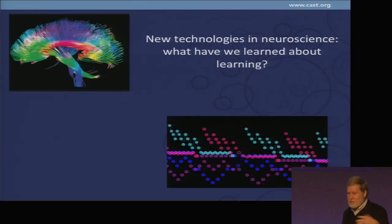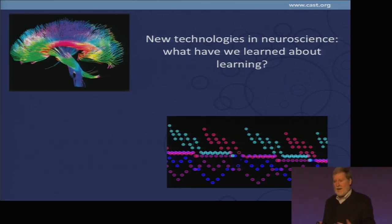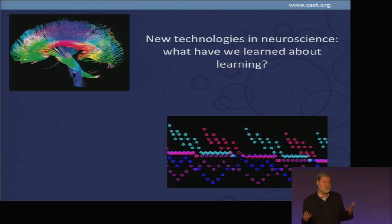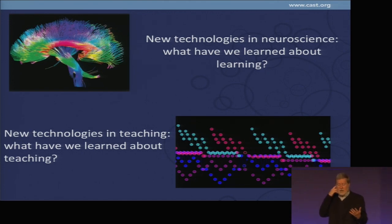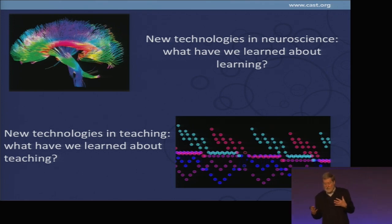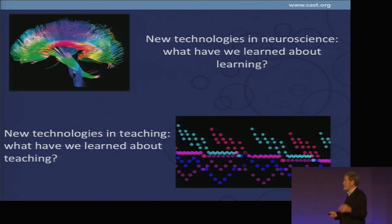There are two major foundations for universal design for learning, and both come, at least indirectly, from what new technologies allow. First, new technologies have transformed our ability to do neuroscience and understand the human brain. Second, new technologies allow us to teach in different ways — we don't have to use the traditional lecture-textbook format. Advances in our understanding of human learning and its diversity, and advances in our ability to use new technologies for teaching, are what go together to make UDL.